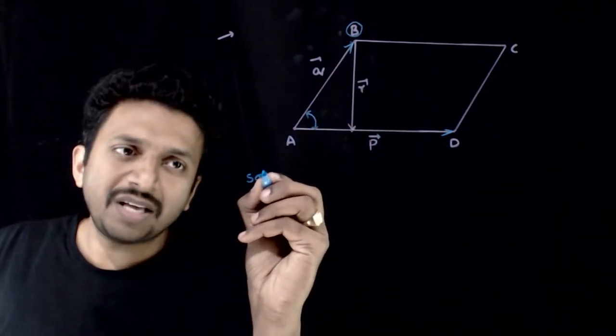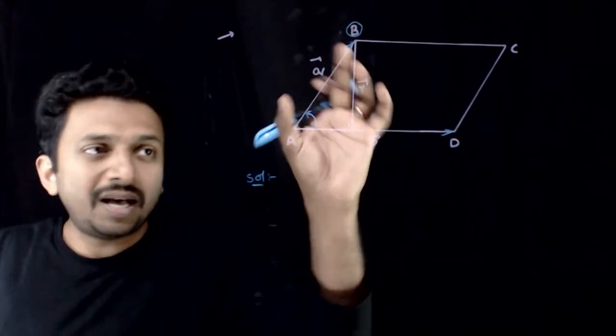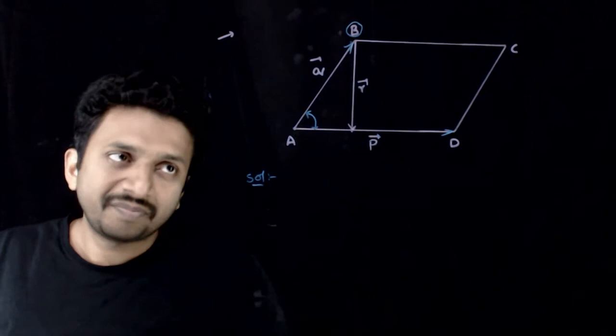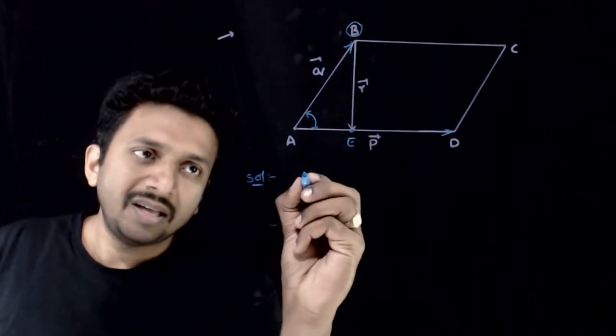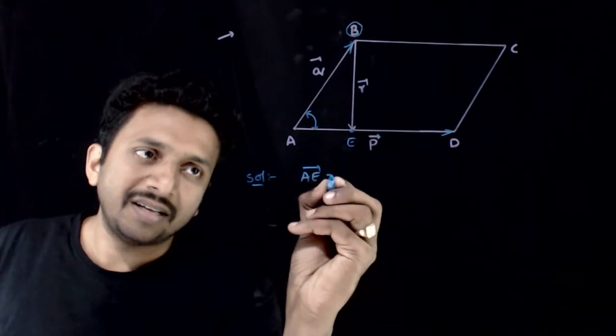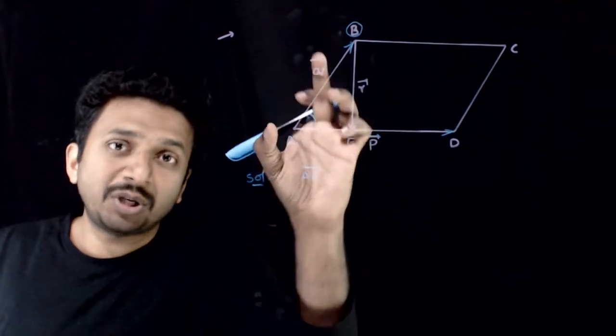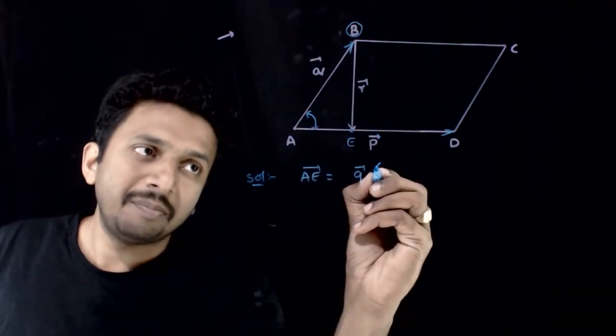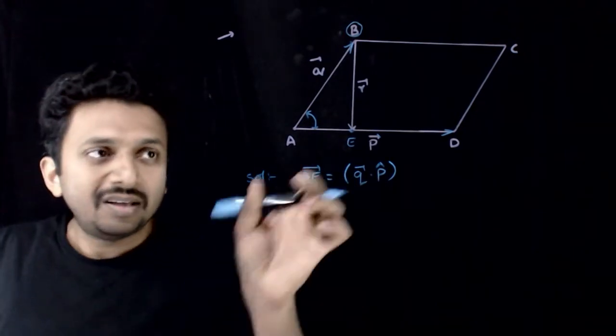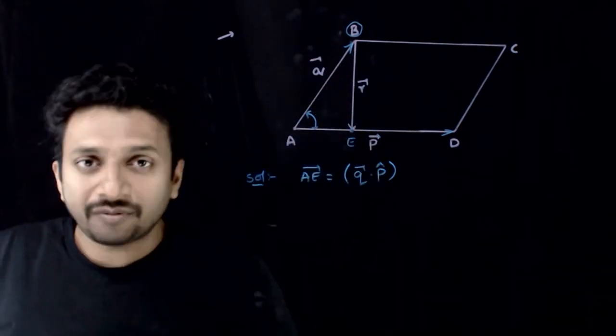This question is based on the concept of projection. Now, what is the projection of AB bar on AD bar? That is nothing but if this point is represented by E, AE bar is nothing but what is the length of AE bar? There is a scalar projection which is Q bar dot P cap. Q bar dot P cap gives you the length of AE.